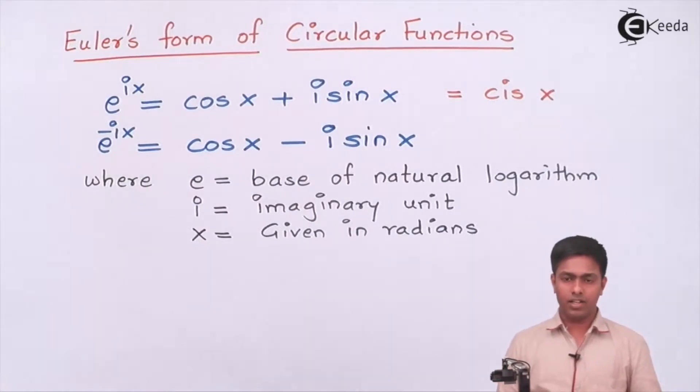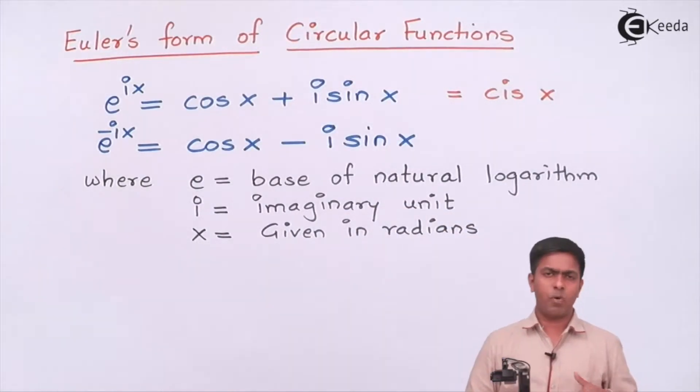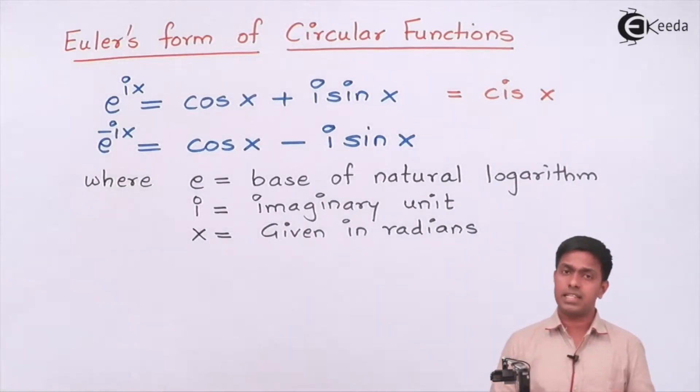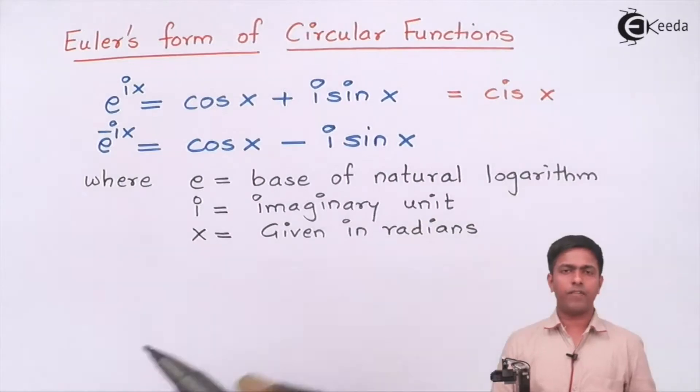x is an angle given in radians. It is possible that x can be a complex number; even if x becomes complex, the identity remains the same. This is the formula given by Euler.